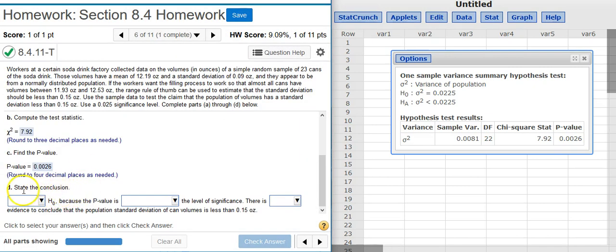And finally, Part D says, State the Conclusion. Well, here we have a p-value of less than 1%, and we're comparing that with a significance value of 2.5%. So our p-value is going to be less than our significance level.